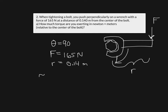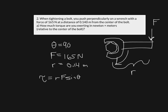To find the torque, I look at the definition: torque is defined as R times F times the sine of some angle, where R is the distance of your lever arm — the distance from the center of whatever you're turning to wherever you're applying the force — F is the force you're applying, and the sine of the angle is the angle between the force and the radius.